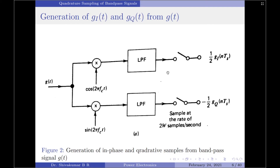Coming back to the diagram, gi(t) and gq(t) are at the outputs of the low pass filter in the upper as well as the lower path. We are going to sample them at the rate of 2W samples per second, and this is going to generate the samples of gi(t) and gq(t), which are represented as gi(nTs) and gq(nTs). However, we should note that when we perform this operation, there is a scaling factor involved — we are going to obtain a constant of 1/2 and −1/2 with respect to gi(nTs) and gq(nTs).